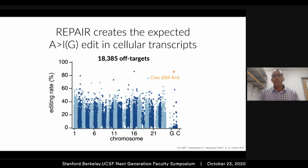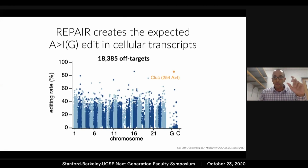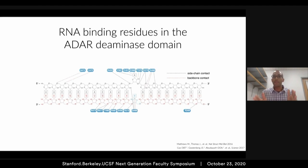However, we had some information about where all these off-targets were coming from. Based on the sequences, we could see it was probably related to the ADAR deaminase domain binding to transcripts independent of Cas13b. So we thought we could mutate some of the RNA binding residues present in the ADAR deaminase domain, which would decrease the ability of ADAR to independently bind to off-target sites, but wouldn't really affect on-target editing as much since Cas13b is tethering it to the on-target site. The RNA binding residues of ADAR were known from a recent crystal structure from Peter Beal's group at UC Davis.